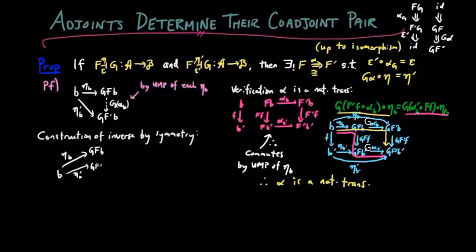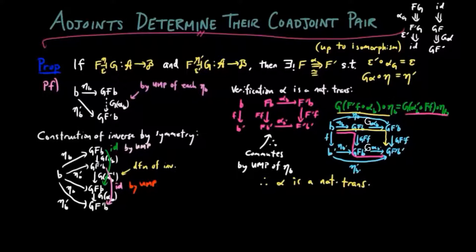And we can demonstrate this by the following diagram, which shows that g alpha b g alpha inverse b equals the identity, and likewise g alpha inverse b g alpha b equals the identity, implying alpha b alpha b inverse equals the identity and alpha b inverse alpha b equals the identity.